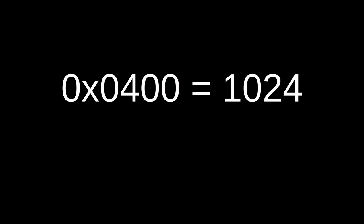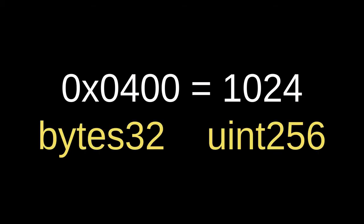0x0400 is equal to 1024, which is the number of subscribers that this channel has surpassed. In this video I'm going to explain how to convert a hexadecimal number to a human-readable decimal number, and in the process I'll explain how bytes32 and uint256, the two basic data types in smart contract languages like Solidity and Vyper, are equal to each other.